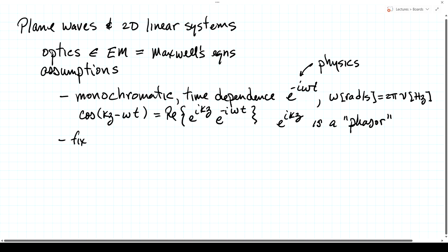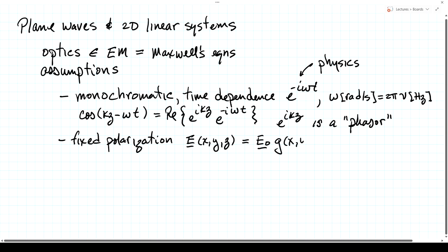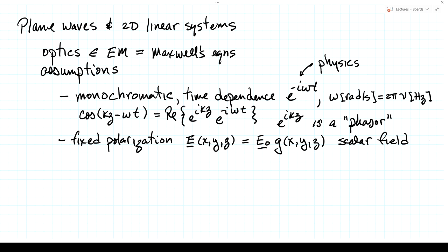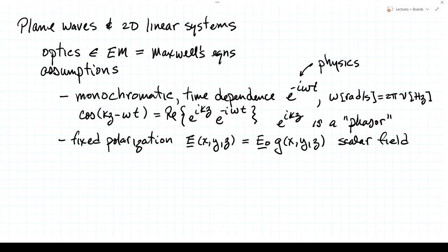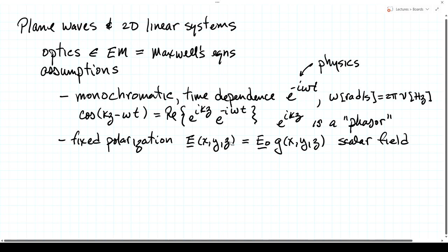We're also going to assume that we have a fixed polarization. So if our electric field phasor is a vector function e of x, y, and z, we assume it has the form of some constant vector e0 times a scalar function g of x, y, and z. This allows us to work with a scalar field rather than a vector field. In many optics problems this is a reasonable approximation — not in all, because polarization can be very important in optics, but for most problems we'll look at, this is a good assumption.